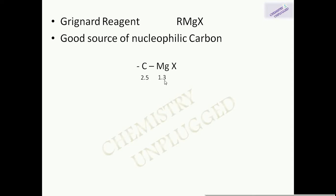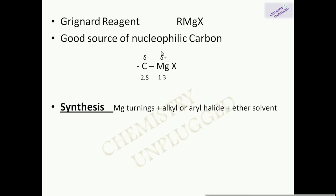Carbon has an electronegativity of 2.5 and magnesium has 1.3. Due to this difference in electronegativity, there is polarization, and because carbon is more electronegative, the shared pair of electrons shifts toward carbon, giving it a delta negative charge, while magnesium has a positive charge. This negatively charged carbon is nucleophilic in nature.